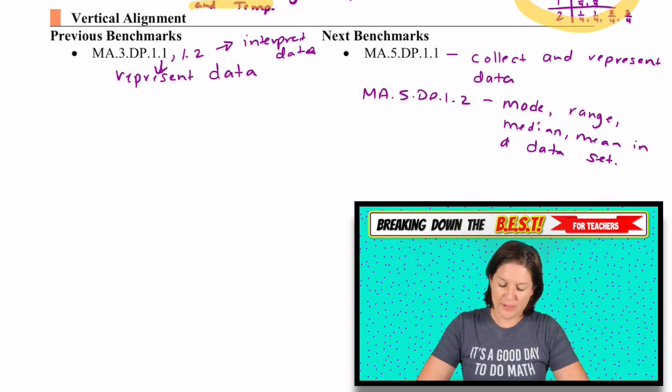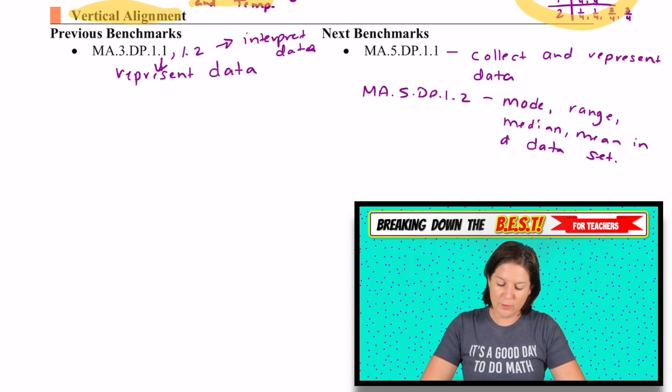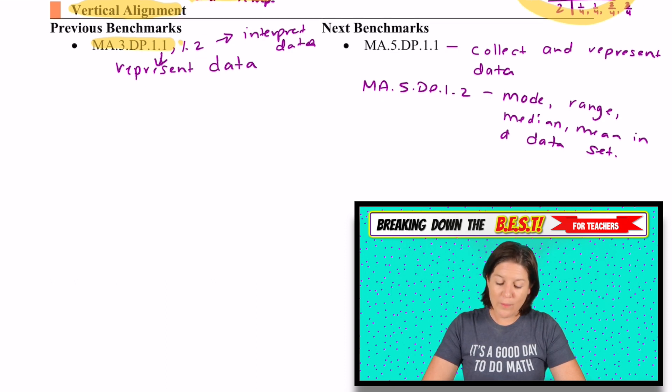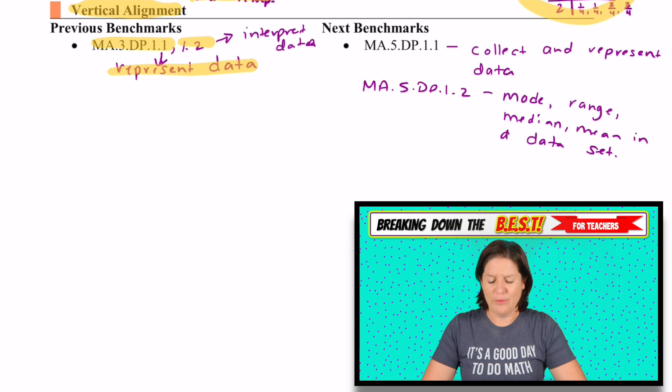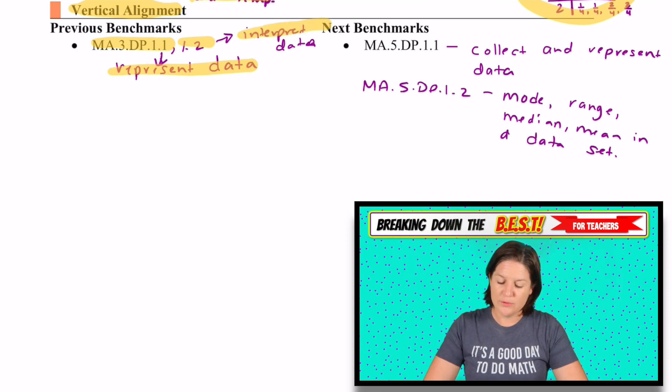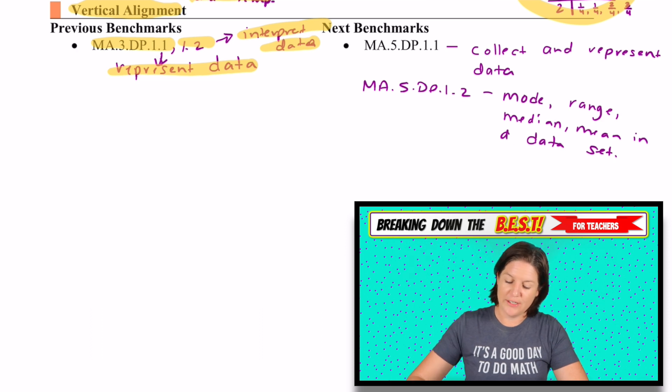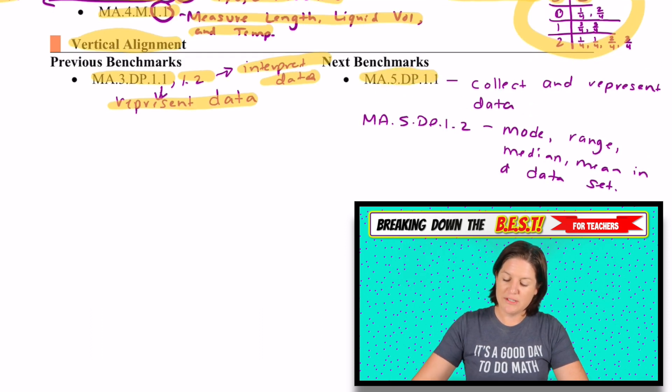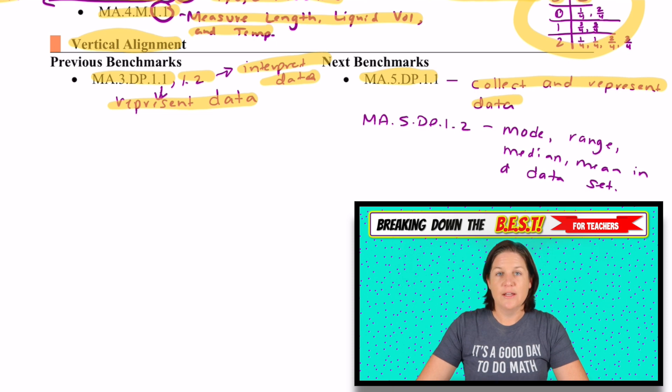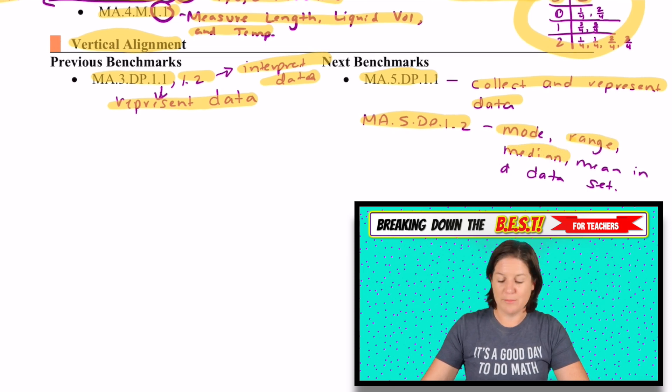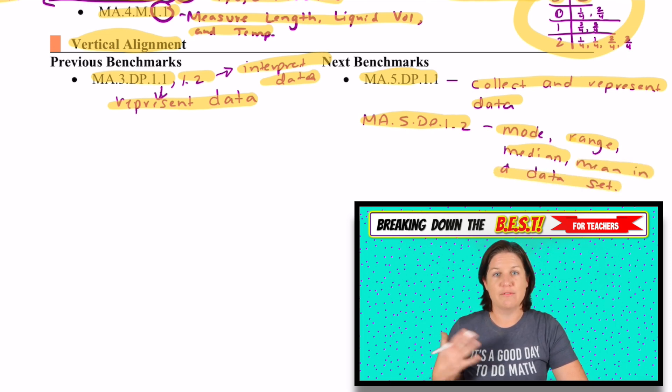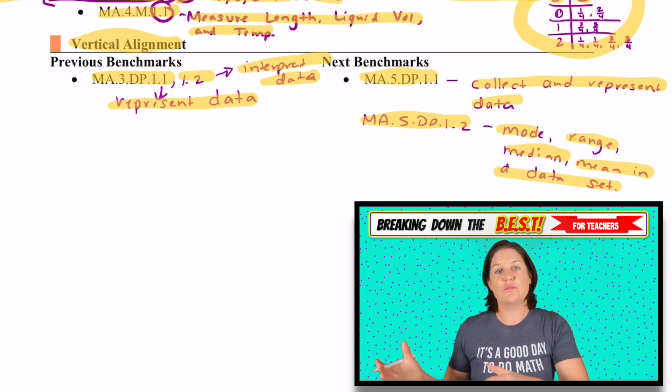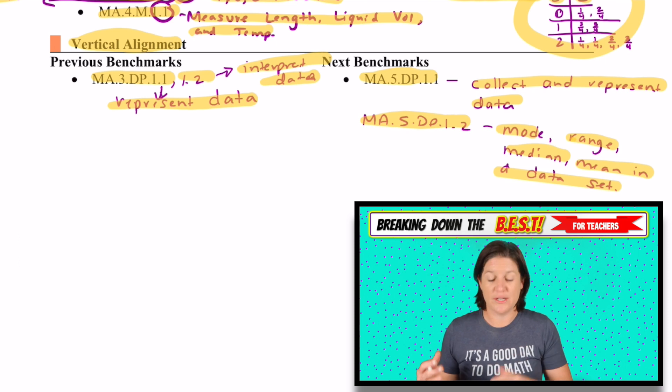We have some vertical alignment from third grade. We have 3.DP.1.1 and 1.2. 1.1 is representing or collecting and representing data, and then 1.2 is the interpretation of data for third grade. And then in fifth grade, we definitely take it up, collecting and representing data. And we have 1.2 in fifth grade, which involves the mode, which we have in fourth, the range, which we have in fourth, the median, which is coming up in fourth, and the mean, which is not a fourth grade aspect. But know that finding the mean, finding the average, is something new that they will be exposed to in fifth grade.